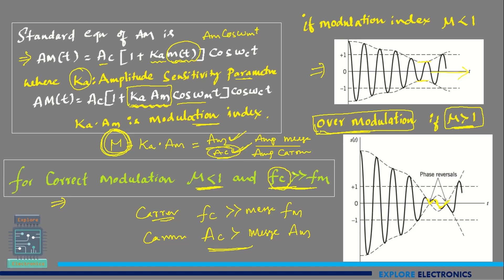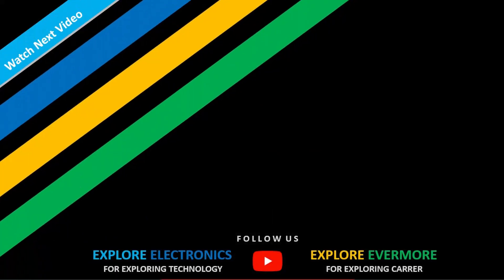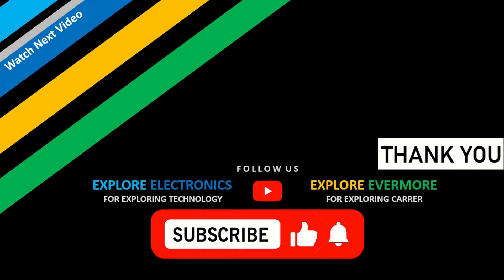Now if you look at the spectrum, these are the two sidebands — the upper sideband and the lower sideband — as seen in the expression. This spectrum represents the message signal spectrum, and this is the representation of the modulated signal spectrum. So this is about amplitude modulation. This derivation is very important for the exam point of view and also for understanding the next concepts. In the next video, let us see frequency modulation and also the detection part — how demodulation works in amplitude modulation. Thank you.